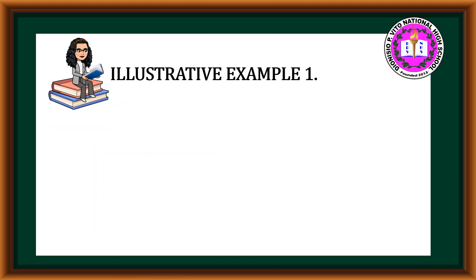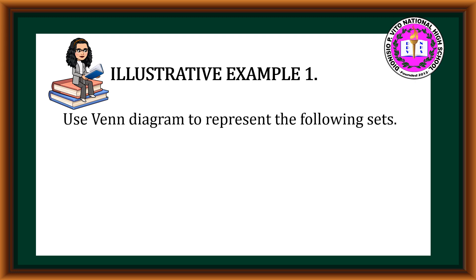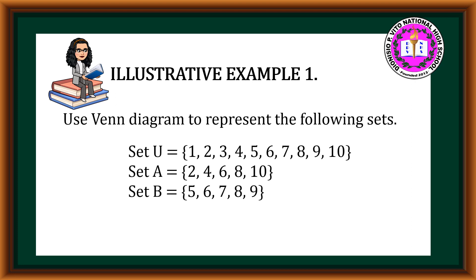Let's have this illustrative example. We're going to use the Venn Diagram to represent the following sets. Our universal set is equal to 1, 2, 3, 4, 5, 6, 7, 8, 9, and 10. Set A is equal to 2, 4, 6, 8, and 10. And the elements of Set B are 5, 6, 7, 8, and 9.